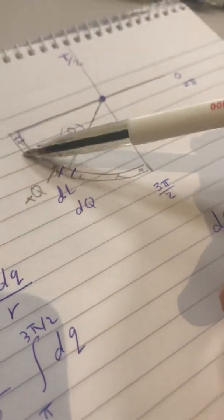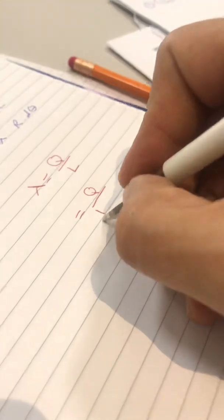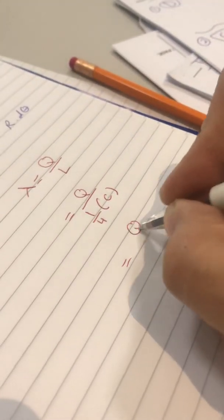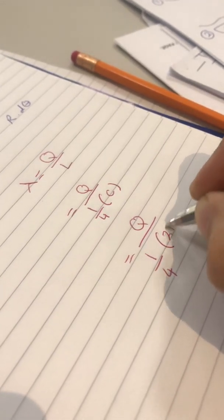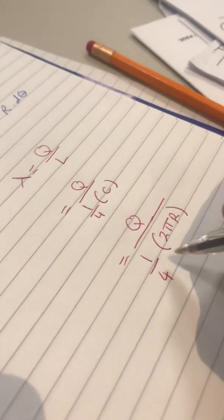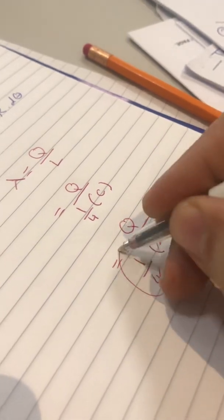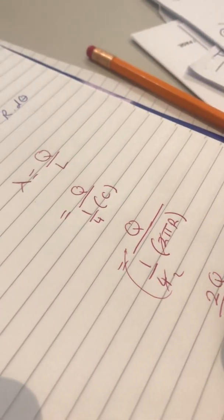Now, the L, the length of this, it's quarter the circumference. So, it will be Q over 1 over 4, the circumference, which is 2 Pi R. If we simplify it, this 2 will go up. It will be 2 Q over Pi R, this is Lambda.